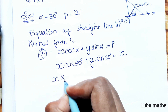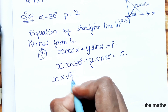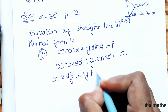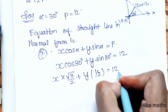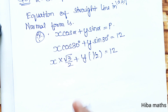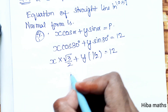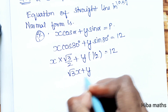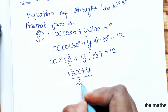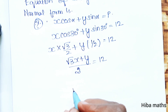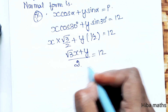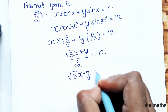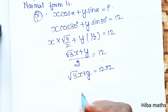Substituting the values: cos 30° = √3/2 and sin 30° = 1/2. So we get x·(√3/2) + y·(1/2) = 12. Combining the fractions: (√3·x + y) / 2 = 12. Cross-multiplying by 2 gives us √3x + y = 24.